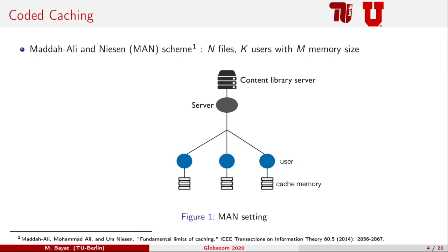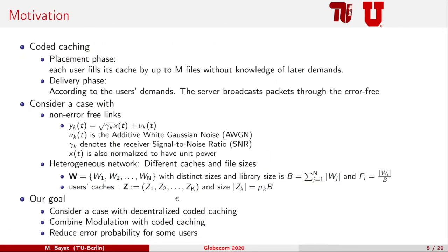Matt Daly and Nissen proposed a coded caching scheme in reference 1, which we refer to as the MAN scheme. In their setting, they have a server which has access to a library of N files. Each file has equal length and this server is connected through a shared error-free link to K users, each with a cache memory size M. In coded caching there are two phases: placement and delivery. In placement, each user fills up their cache without knowing future demand, and in delivery each user requests a file and the server creates a broadcast multicast message.